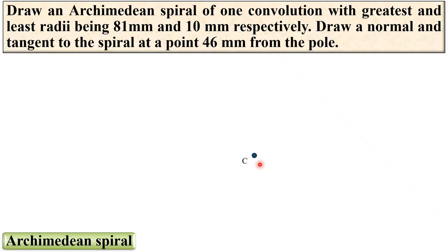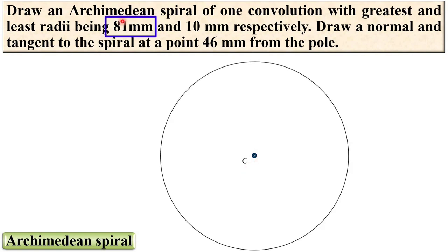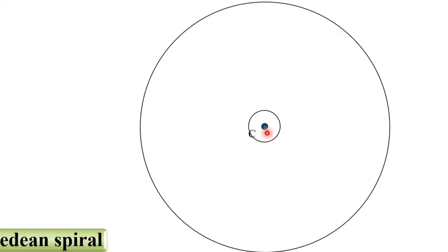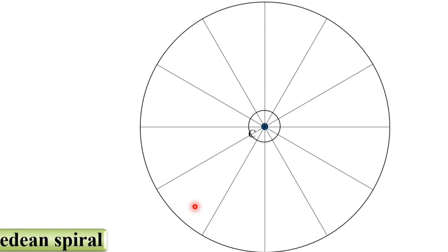First of all, mark any one random point and give the name as C. Draw the circle with greatest radius as 81 mm — take the compass, set the radius as 81 mm and draw the circle. Next, draw the circle with least radius as 10 mm. For both circles, C is the common center. Next, divide the circle into 12 equal parts. You can divide the circle into 8 equal divisions also — that depends on the available time in the examination.